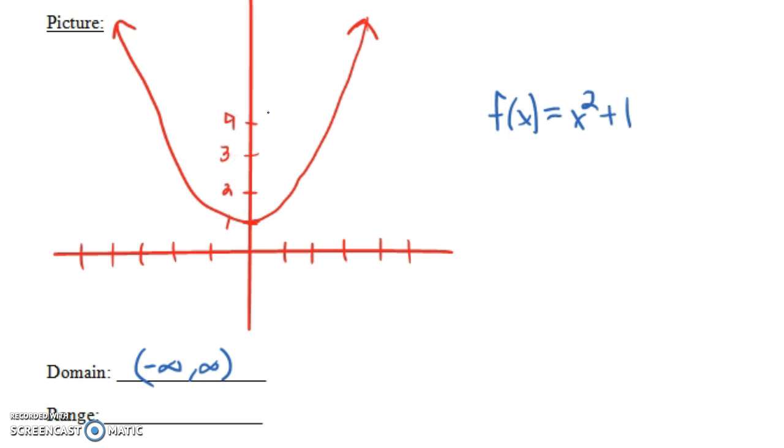Now what about the range? Well, the range, notice we can't get all possible outputs for the range. The range is just the numbers that are bigger than or equal to 1. So the range would be the interval from 1 to infinity, 1 all the way up to infinity. We put an open parenthesis around infinity, as always, but it includes 1. F of 0 is 1, so 1 is a possible output. So the range in this case would be the closed interval from 1 to infinity, and it's open at infinity. So that's how you find the domain and range based on a graph.